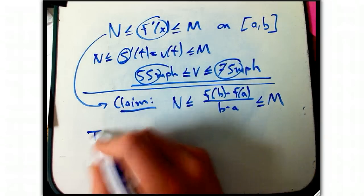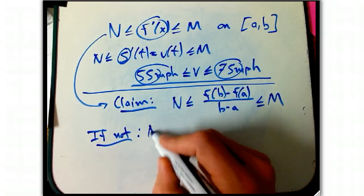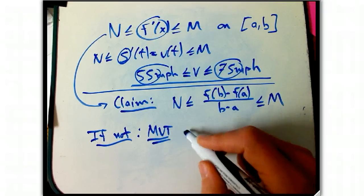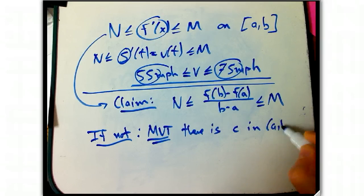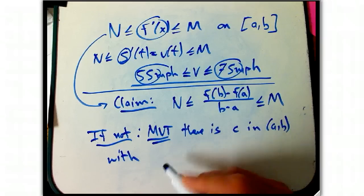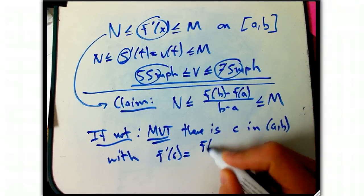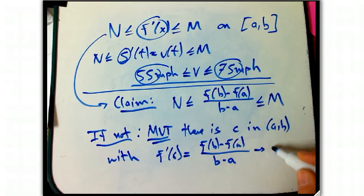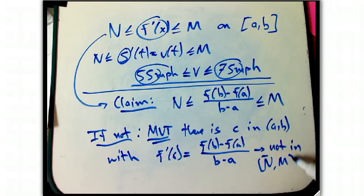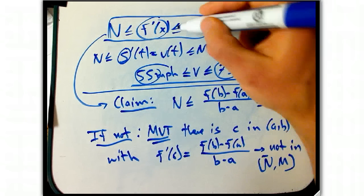And why is that? But if not, suppose this weren't true. Well, the actual MVT, the precise version of MVT, says there is a c in AB with f prime of c is equal to this number. But we're assuming it's not in this interval between n and m. But wait, we're assuming that all those derivative numbers are in there. So this just is fairly simple.